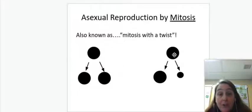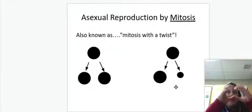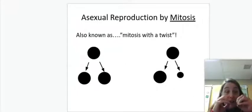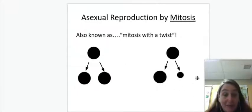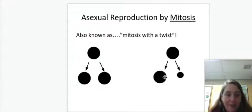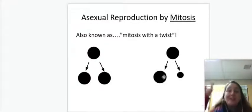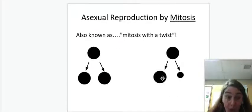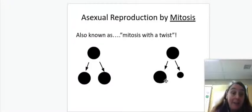Well, you can have mitosis happen where all the DNA gets copied and it gets divvied up to two cells. But then instead of when the cytoplasm pinches in during telophase, does it evenly, it can do it unevenly. And you can get a little cell and a big cell. They're both genetically identical. They both had copied DNA. They both went through mitosis. They're both clones of each other. But one cell has very little cytoplasm and one gets most of it.